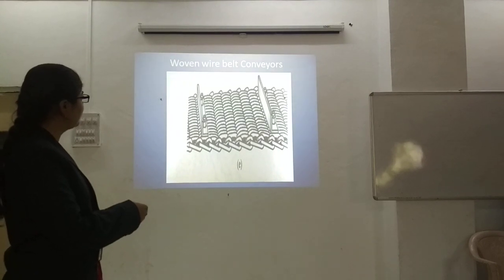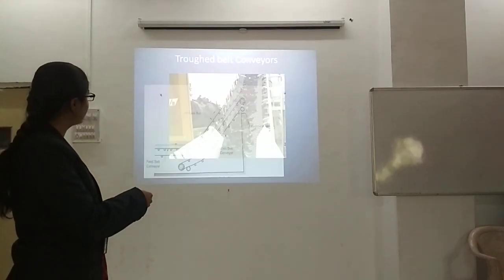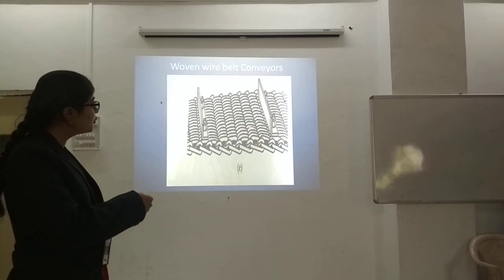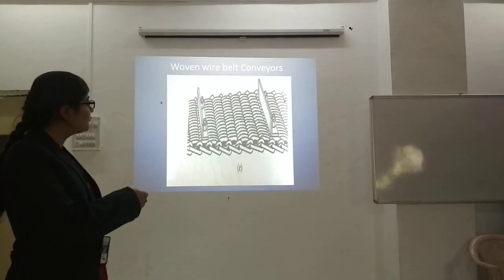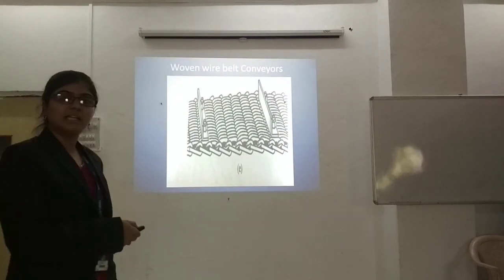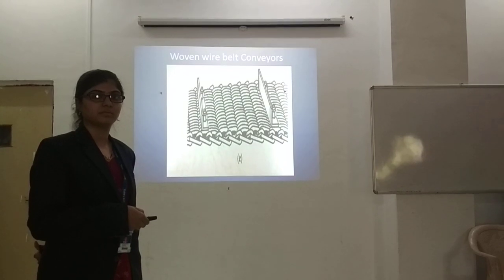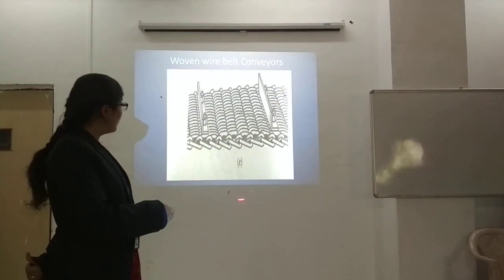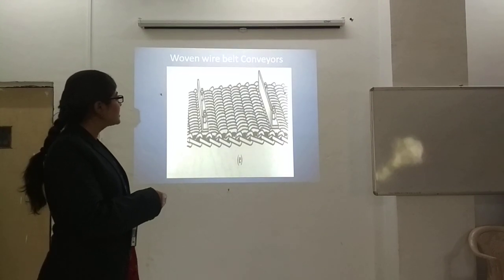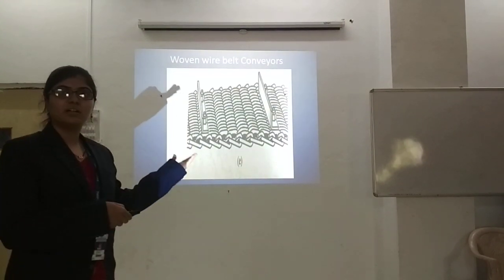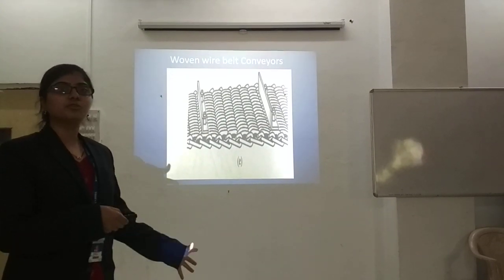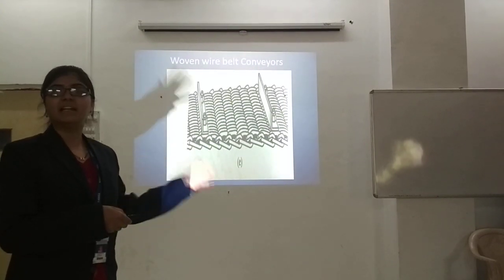Next is the woven wire belt conveyor. As you can see, it consists of woven wire of metals. It is a metallic woven wire. Since water or air can easily pass through it, the material can be cooled down easily. Hence it is used to supply material at high temperature.